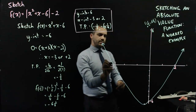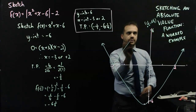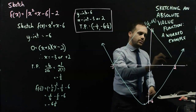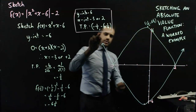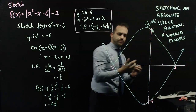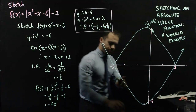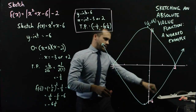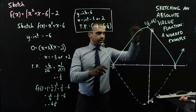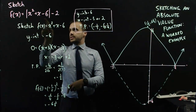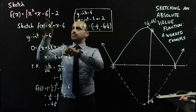And now all of that negative portion becomes like a bounce — a quadratic bounce at each x-intercept. So that is the absolute value of x squared plus x minus 6.